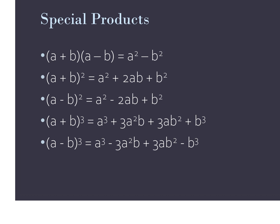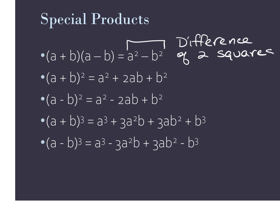The first one — notice this product resulted by multiplying a binomial that has exactly the same terms in it. They both have an A, they both have a B, but they have opposite signs. One of the binomials is addition, one is subtraction. This special product that results is called the difference of two squares. Remember, the word difference means subtraction. So the result was a subtraction problem with two perfect squares.